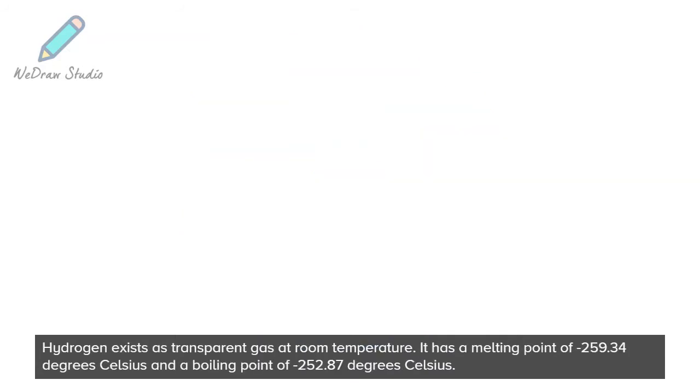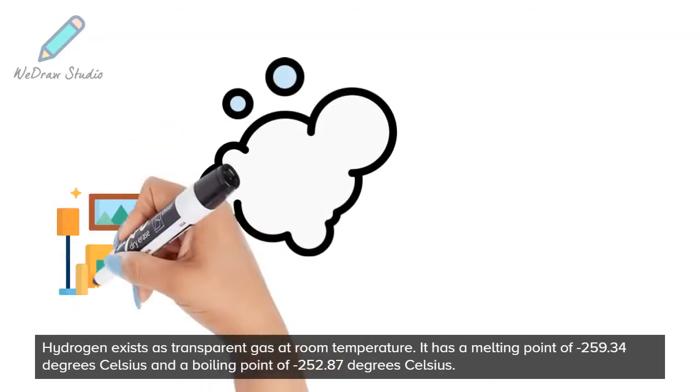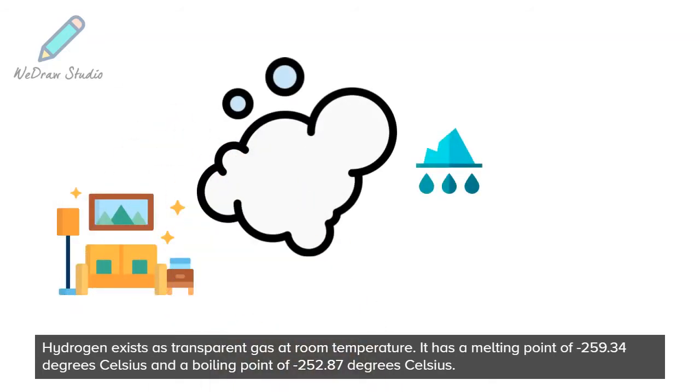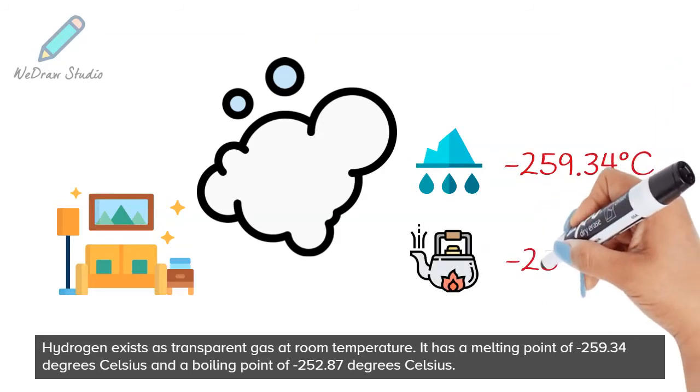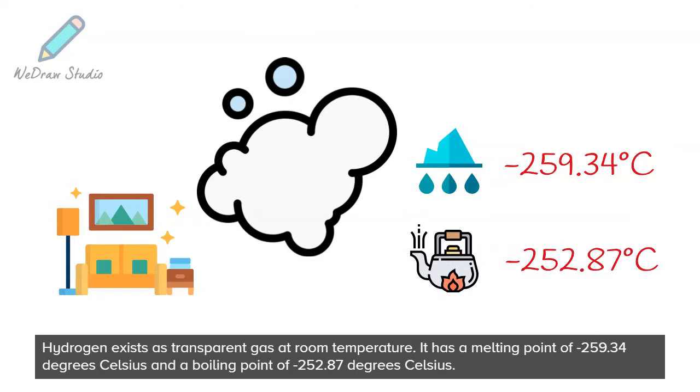Hydrogen exists as transparent gas at room temperature. It has a melting point of minus 259.34 degrees Celsius and a boiling point of minus 252.87 degrees Celsius.